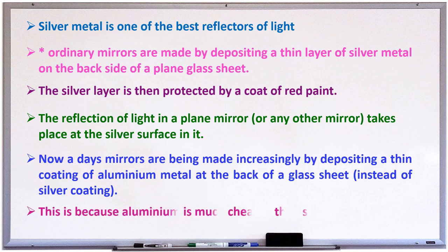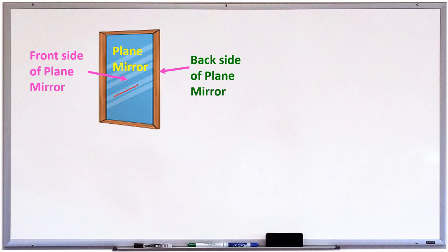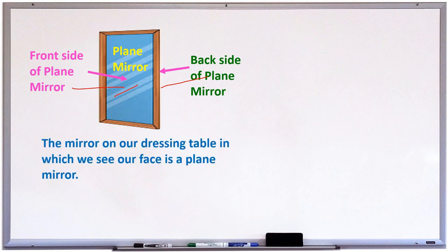As we know, aluminum is cheaper than silver and it reflects light very well. This is a plane mirror and this is the front side of the mirror and this one is the back side of the mirror, where the thin layer of aluminum or silver is coated. The mirror on our dressing table in which we see our face is a plane mirror.